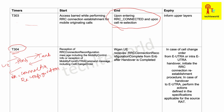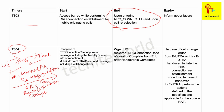T304 ends when the UE sends the target eNodeB the RRC Connection Reconfiguration Complete message. Once the target eNodeB receives this message, T304 is stopped.